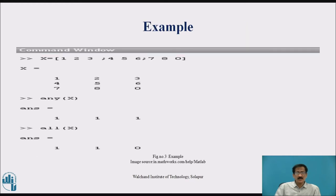The number is given: x is equal to [1, 2, 3; 4, 5, 6; 7, 8, 9]. If you enter it, it will give the result x equal to a 3×3 rectangular matrix. any(x) will give [1, 1, 1].